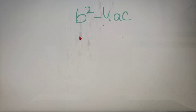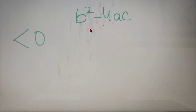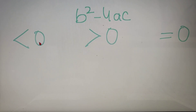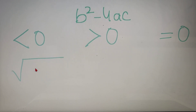Let's divide our analysis of the discriminant into three cases. For the first case we take the discriminant as less than 0. When the discriminant is less than 0, we will have no real solutions, because if b² − 4ac is less than 0 then we get an imaginary quantity, so there are no real solutions.